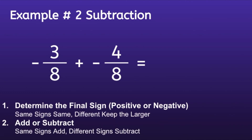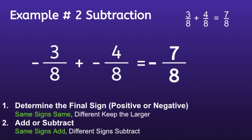So we can follow the same steps from before. Step one: Determine the final sign. If I look at my numbers, I notice that both of them are negative, which means I will use 'same signs same.' And since both of them are negative, my answer will also be negative. Step two: Add or subtract. Since I have the same signs, I'm going to use 'same signs add.' And 3 eighths plus 4 eighths is equal to 7 eighths. So the final answer will be negative 7 eighths.